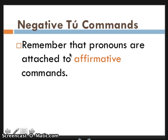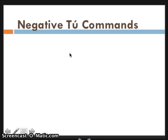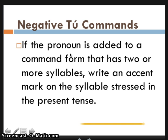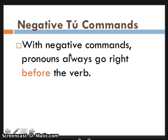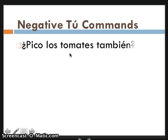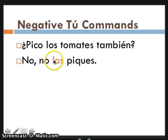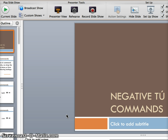Remember that pronouns are attached to affirmative commands, but with negative commands they actually go before the verb. So with affirmative commands you attach pronouns to the end, but with negative commands you put the pronouns before the verb — which is what you should be used to. So instead of 'pícalos,' it's 'no los piques' — the pronoun 'los' for 'tomates' comes before the conjugated verb. And that's negative tú commands.